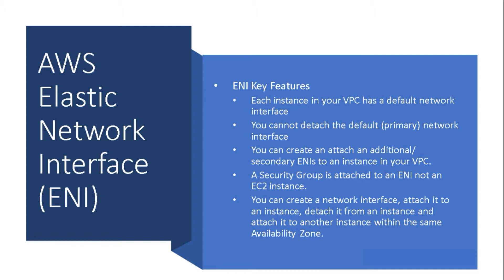Note that the ENI should be created within the same availability zone where you have your EC2 instance to which you are trying to attach the secondary ENI. A security group is attached to an ENI, not an EC2 instance. With this approach, you can have multiple routes to the same EC2 instance with different security configurations.